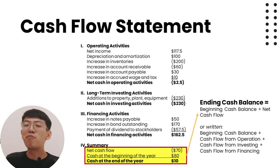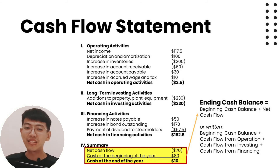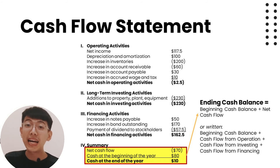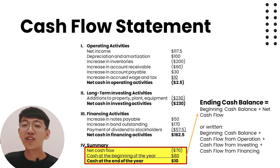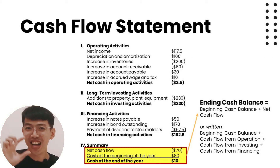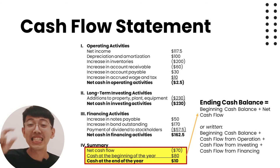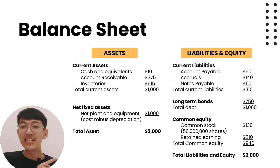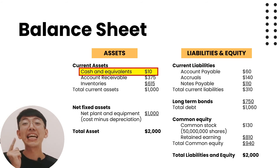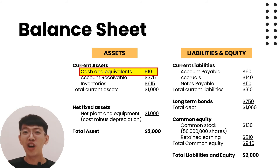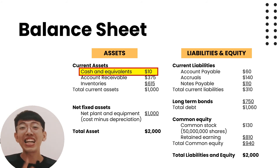How do we find the ending cash balance? Ending cash balance equals beginning cash balance plus net cash flow, or: beginning cash balance plus operating cash flow plus cash flow from investing activities plus cash flow from financing activities. In this case, beginning cash is 80 dollars and net cash flow is minus 70 dollars, so ending cash balance equals 80 plus minus 70, which equals 10 dollars. This 10 dollars will appear as the cash balance in the balance sheet.